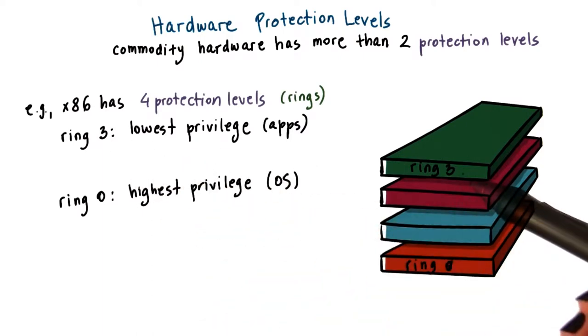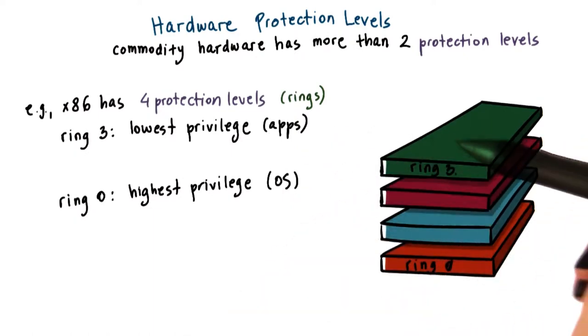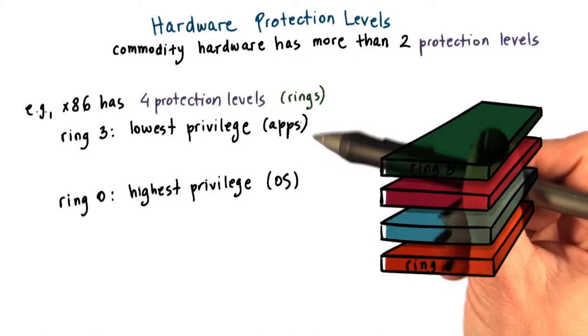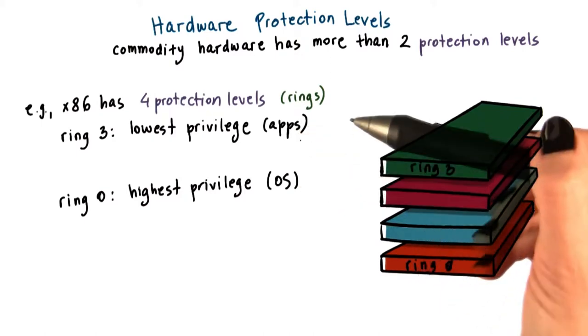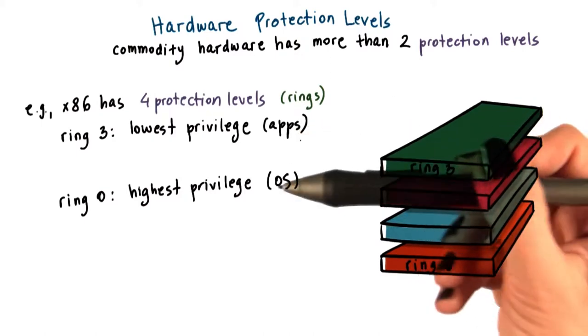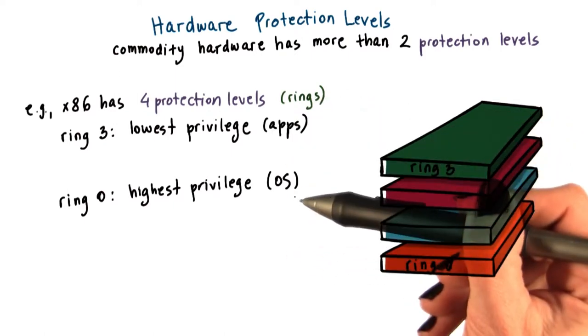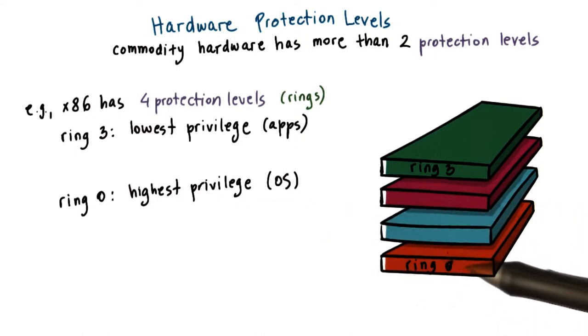In contrast, ring three has the least level of privilege. So this is where the applications would reside. Whenever the applications try to perform some operation for which they don't have the appropriate privileges, then a trap would be caused and control would be switched to ring zero to the lowest privilege level.